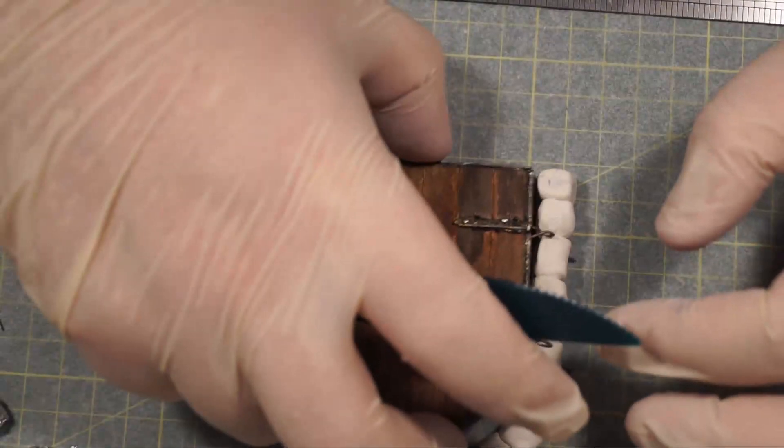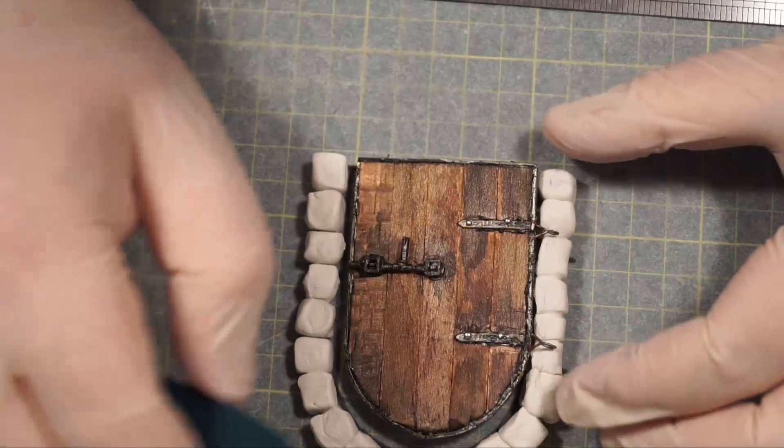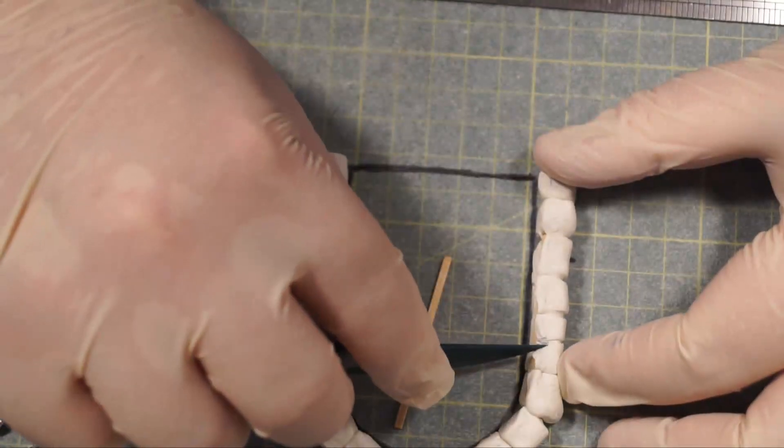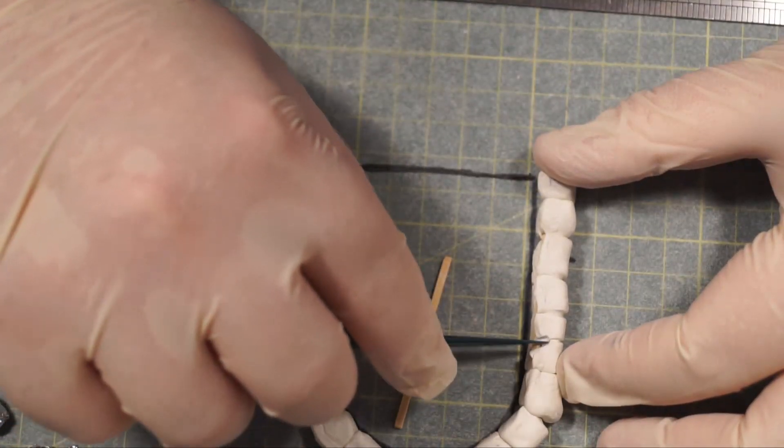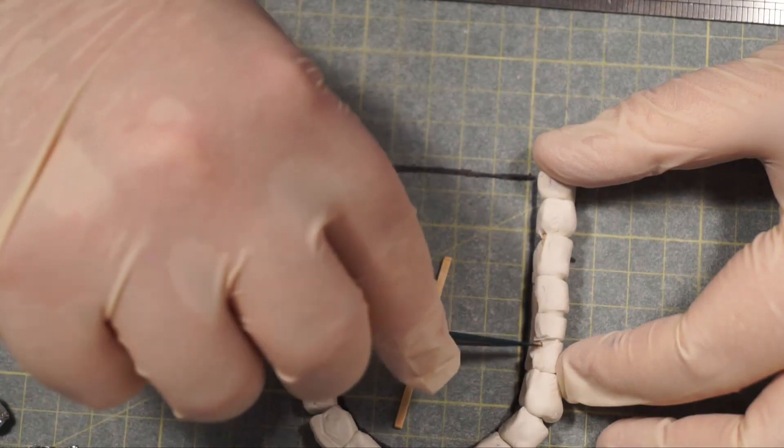If you're going to use the oven bake clay, you can leave it in there. Obviously if you're using the air dryer, it's not going to make any difference whatsoever. You could probably leave the drinking straw in there.